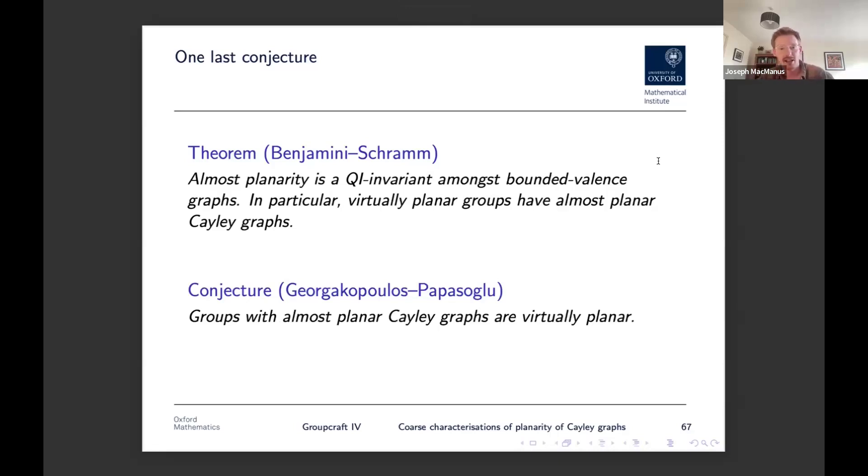I don't really know how to prove this. I think it's an interesting problem. It turns out that almost planarity is equivalent to essentially having a regular map, if you're a coarse geometer, from your graph into some kind of planar surface. I think the keyword that Benjamin and Schramm use is a quasi-monomorphism, whatever that means. But yeah, if you have any ideas about this, you know, please let me know because I think it's a very funny problem and I would like to work on it.